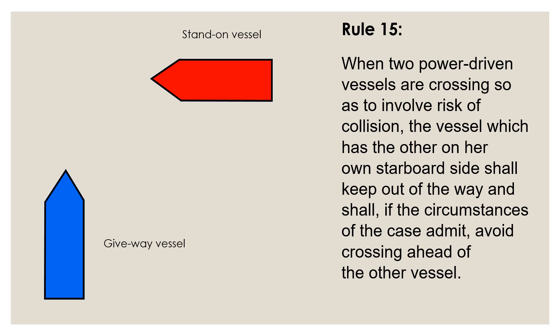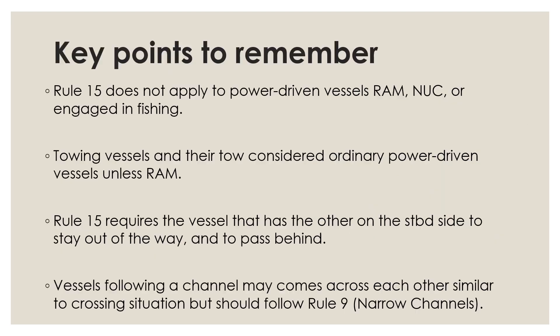There are a few situations where application of the crossing rule is not straightforward. Vessels following a winding river or a channel may approach each other in what may appear to be a crossing situation. However, they have to follow Rule 9 for narrow channels and stay to the far right of the channel, which is dictated by Rule 9. Rule 15 also does not apply in such cases.